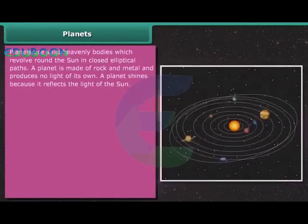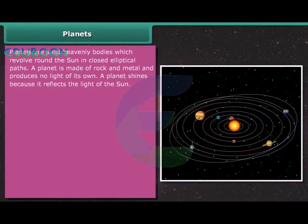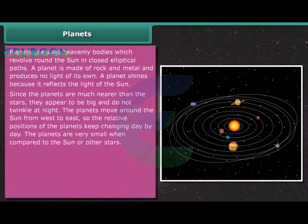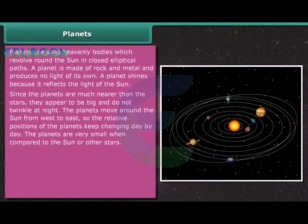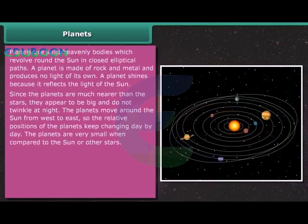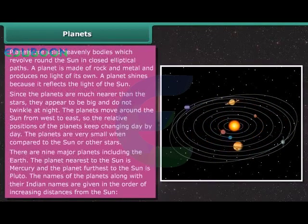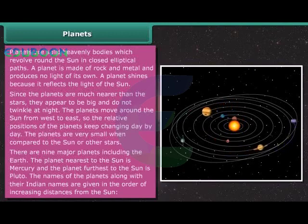Planets. Planets are solid heavenly bodies which revolve around the Sun in closed elliptical paths. A planet is made of rock and metal and produces no light of its own. A planet shines because it reflects the light of the Sun. Since the planets are much nearer than the stars, they appear to be big and do not twinkle at night. The planets move around the Sun from west to east so the relative positions of the planets keep changing day by day. The planets are very small when compared to the Sun or other stars. There are nine major planets including the Earth. The planet nearest to the Sun is Mercury and the planet farthest to the Sun is Pluto. The names of the planets along with their Indian names are given in the order of increasing distances from the Sun.